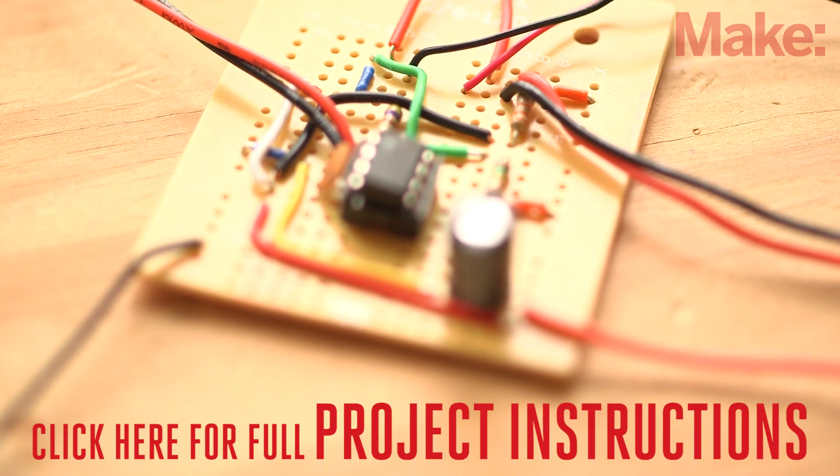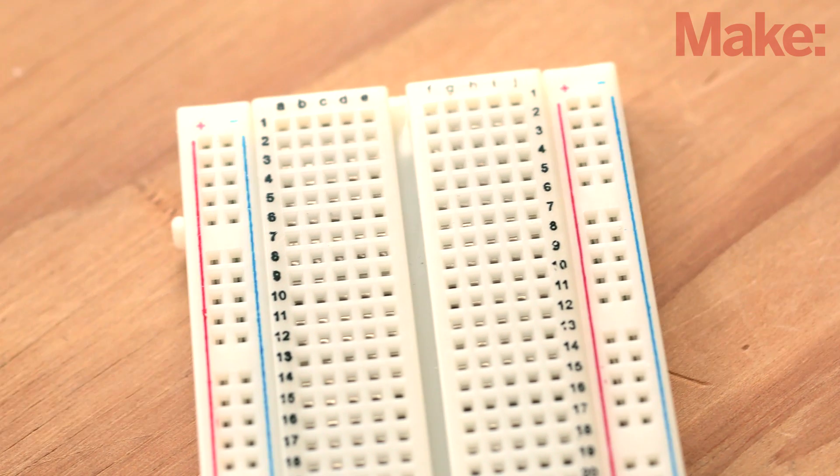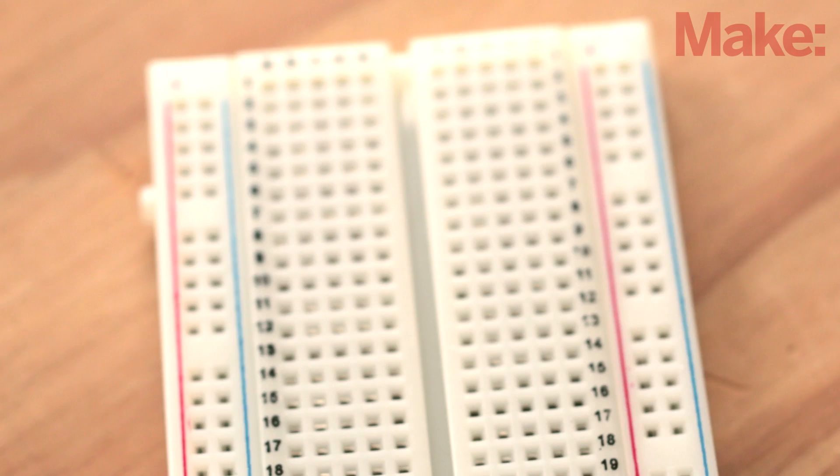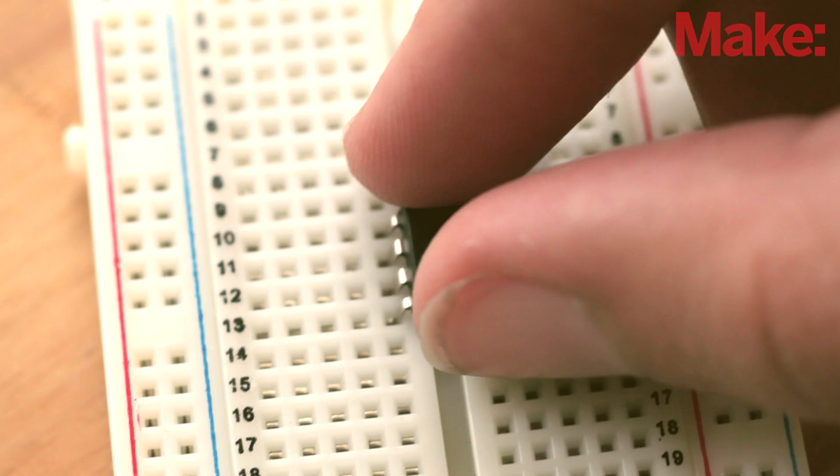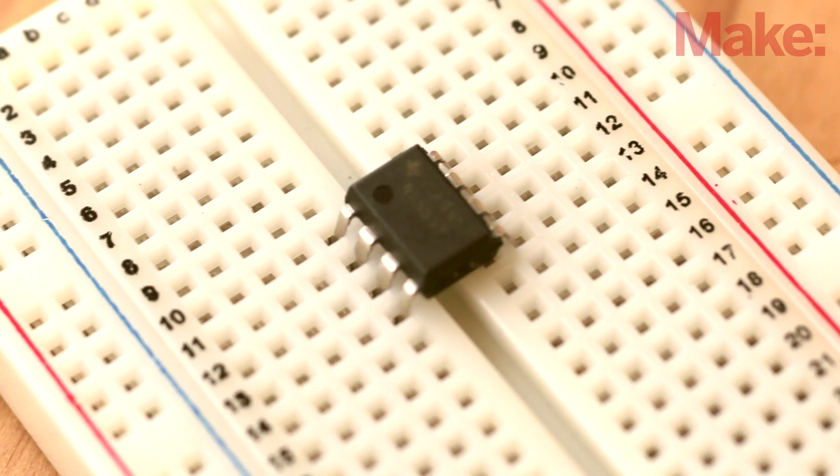Okay, let's get started with the build. We'll start by breadboarding the circuit so we can test the timing. Insert the 555 IC into the middle of the breadboard with pin 1 oriented in the top left.